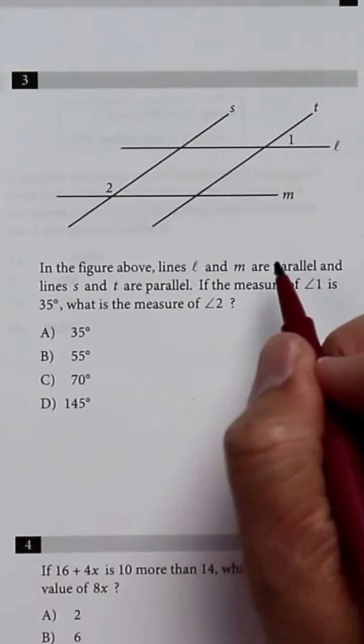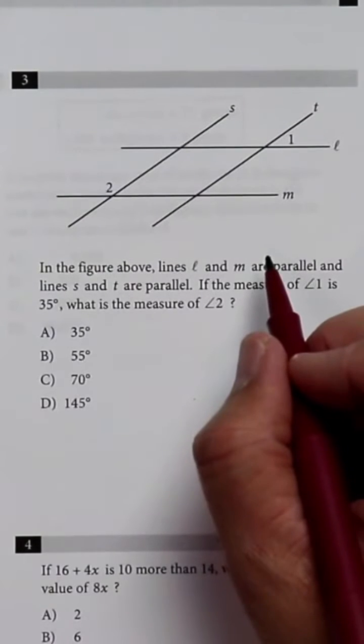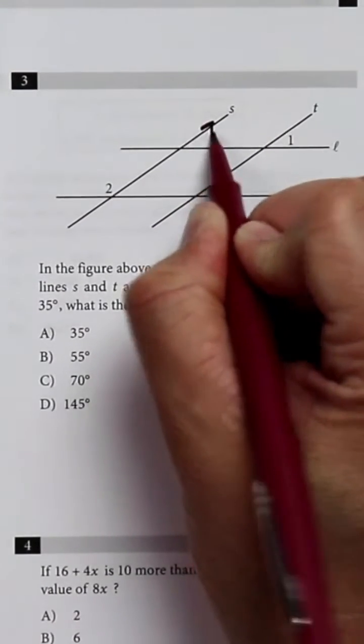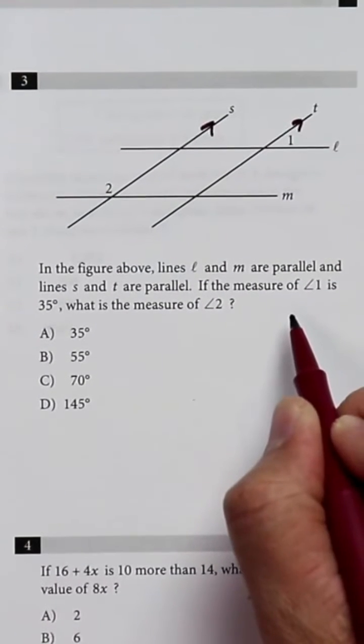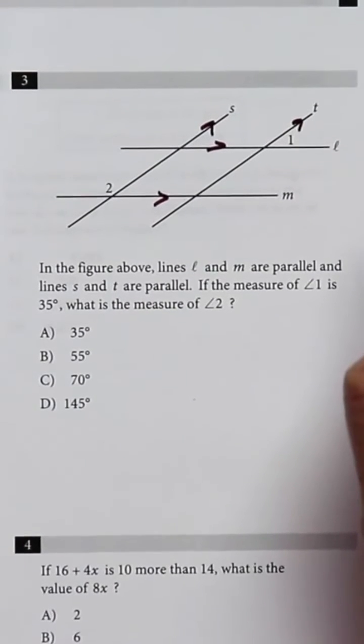In this geometry problem, you need to know your properties of parallel lines cut by a transversal. And we have two sets of parallel lines. Line S and T are parallel to each other, and line L and M are also parallel to each other.